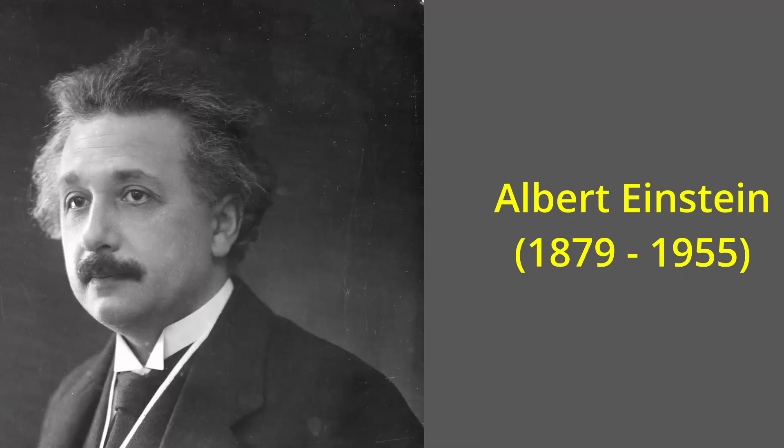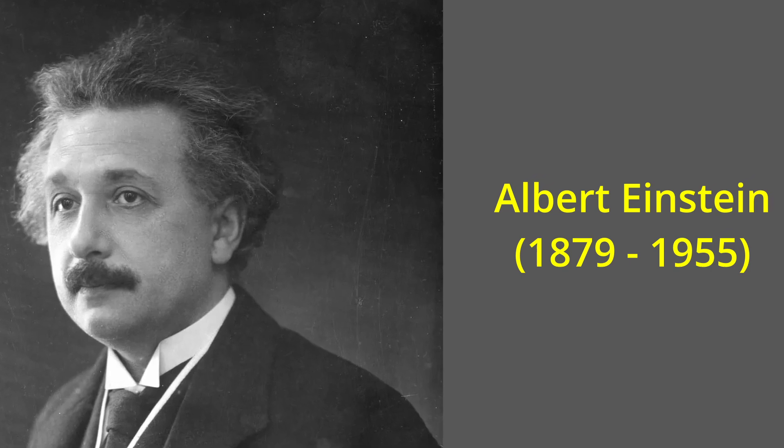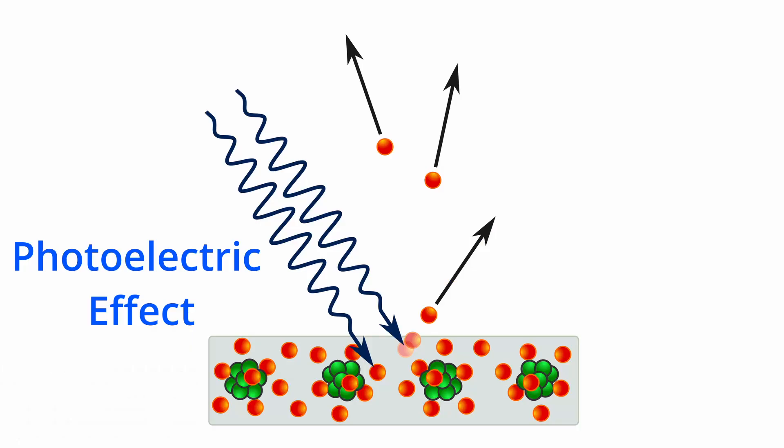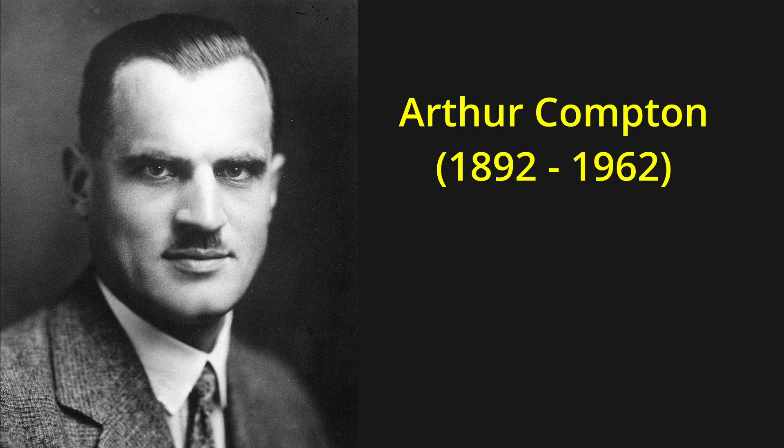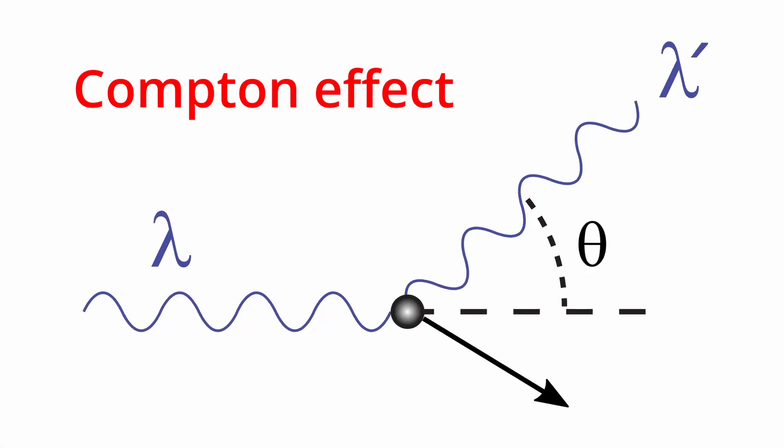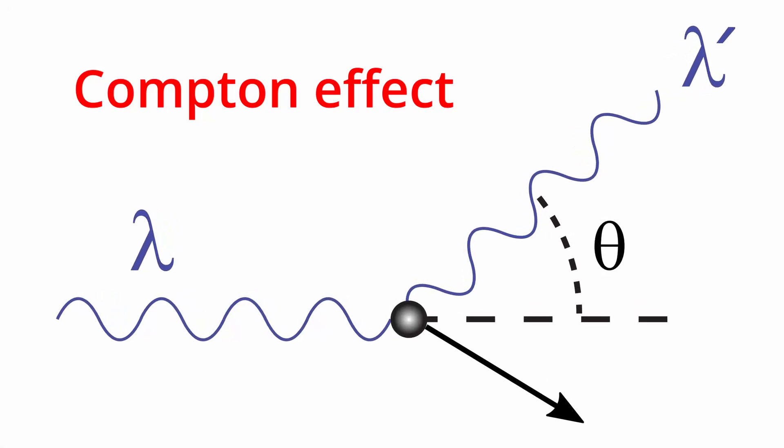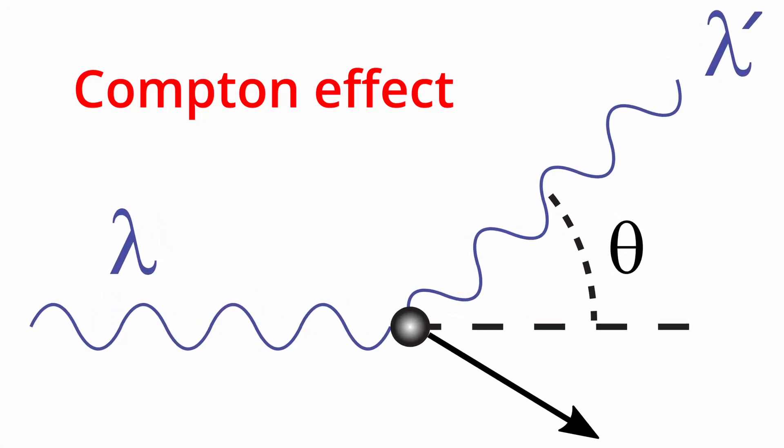Five years later, Albert Einstein used Planck's constant to explain the photoelectric effect. Einstein assumed that light was composed of wave packets that he called light quanta. It took another twenty years for Arthur Compton to show that these light quanta, now called photons, could be scattered by electrons. But before Compton's experiment...